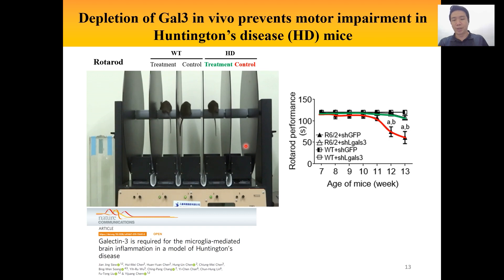So from here, we know that depletion of galectin-3 inhibitor prevents motor impairment in Huntington's disease.